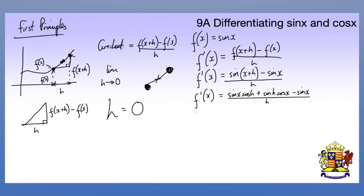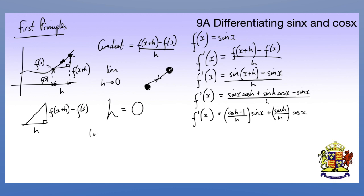Now what we do is group together the sines and cosines. We have cos h minus 1 over h, times sine x, plus sine h over h, times cos x. Thinking about the limit as h tends to 0 for sine h over h: we know sine h roughly equals h from our small angle approximation, so sine h over h equals 1.